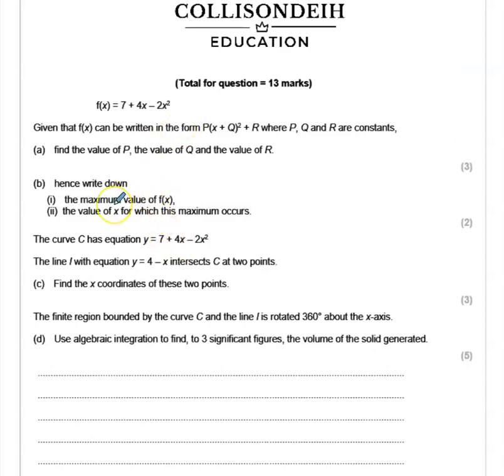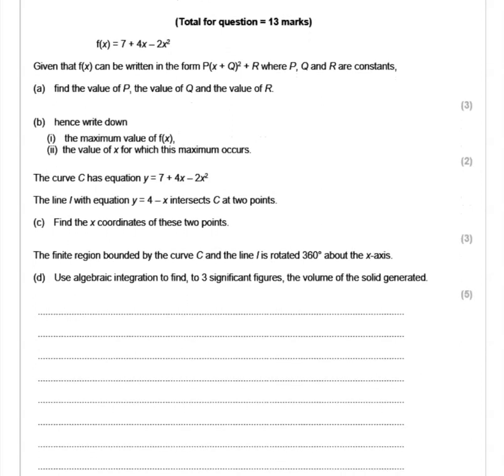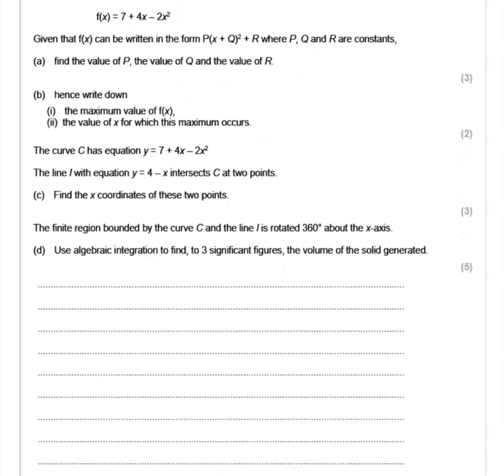Let's begin with part A. We've been given that f(x) is 7 + 4x - 2x² and the question clearly says that given f(x) could be written in the form P(x + Q)² + R, we should find P, Q, and R.